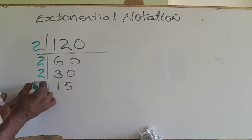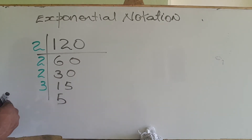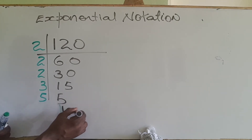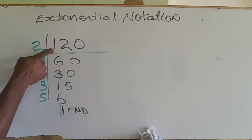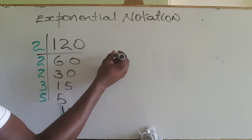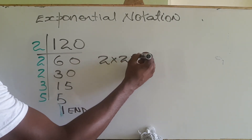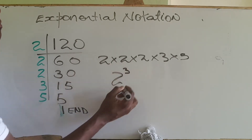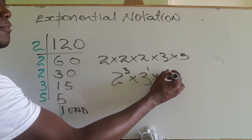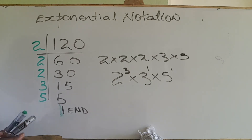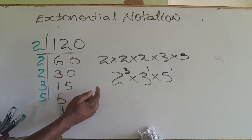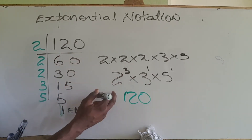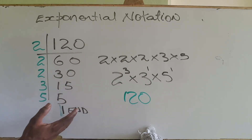So we use the next prime factor, which is 3. 3 into 15 is 5, and 5 into itself is 1. When I reach 1, I know I'm at the end. All of these factors multiplied give 120: 2 × 2 × 2 × 3 × 5, which means 120 = 2³ × 3¹ × 5¹. We can verify: 8 × 3 = 24, 24 × 5 = 120. This is 120 written in exponential notation using prime numbers.